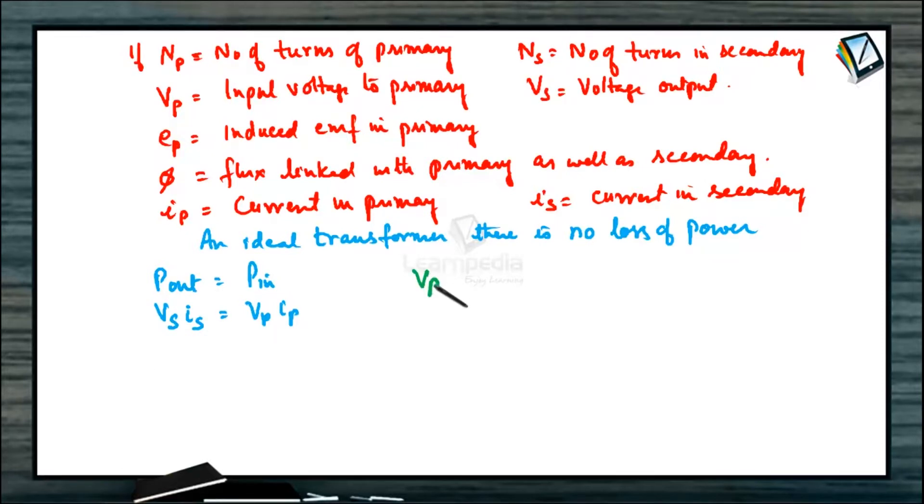Voltage across primary Vp equals EMF across primary, which we can write as Np×dΦ/dt. The flux is same. Voltage across secondary Vs equals EMF across secondary, which is Ns×dΦ/dt. The flux change is the same.